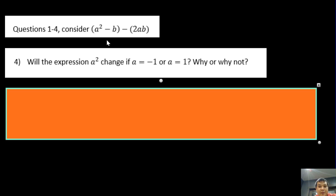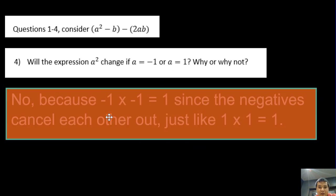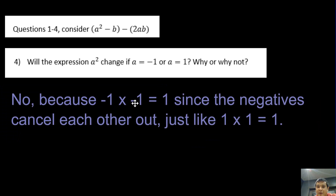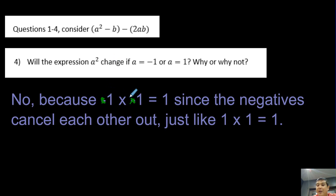Will the expression a² change if a equals negative 1 or a equals 1? Again, the answer is no, because negative 1 times negative 1 is 1 — the negatives cancel each other out — just like 1 times 1 equals 1. When you multiply two negatives together, they cancel each other out and you get 1.